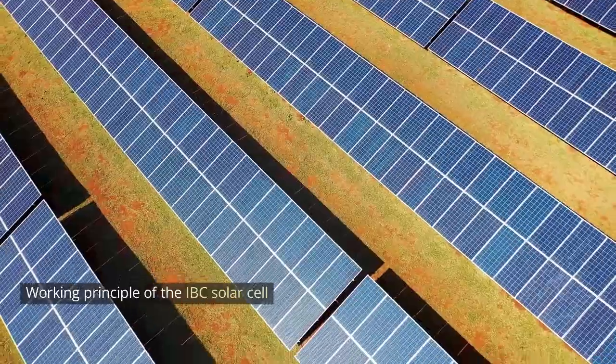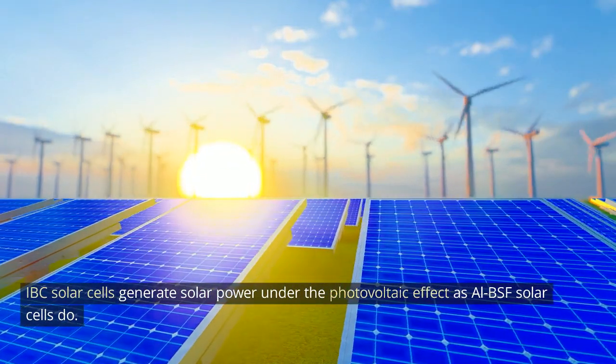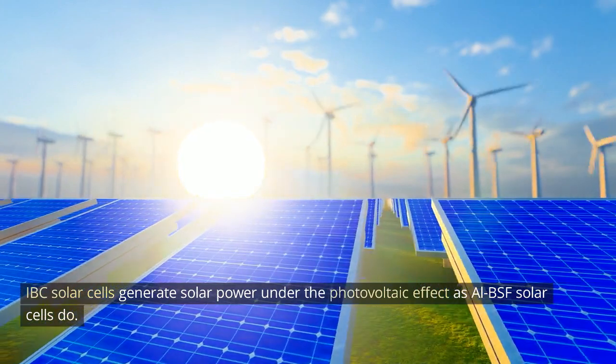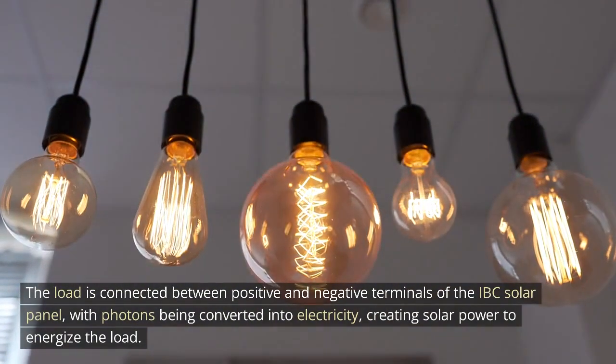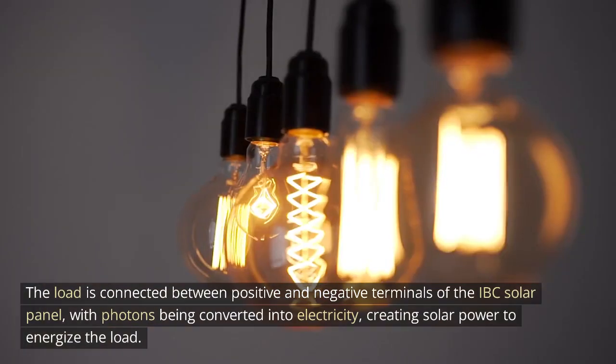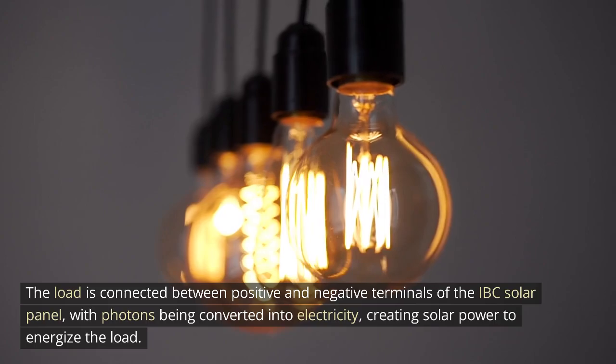Working principle of the IBC solar cell. IBC solar cells generate solar power under the photovoltaic effect as LBSF solar cells do. The load is connected between positive and negative terminals of the IBC solar panel, with photons being converted into electricity, creating solar power to energize the load.